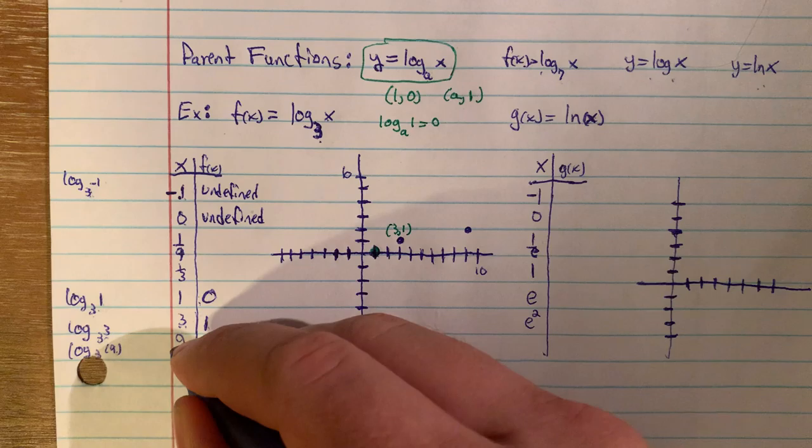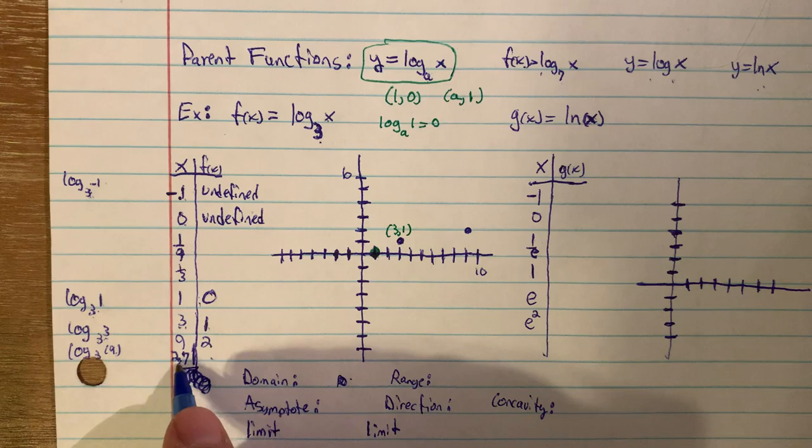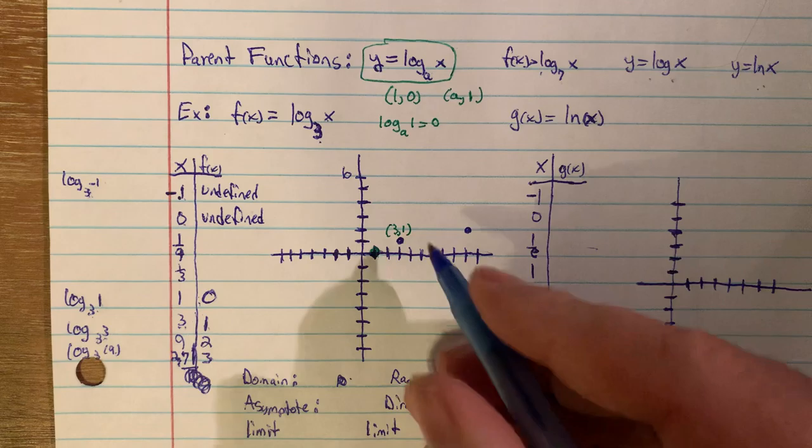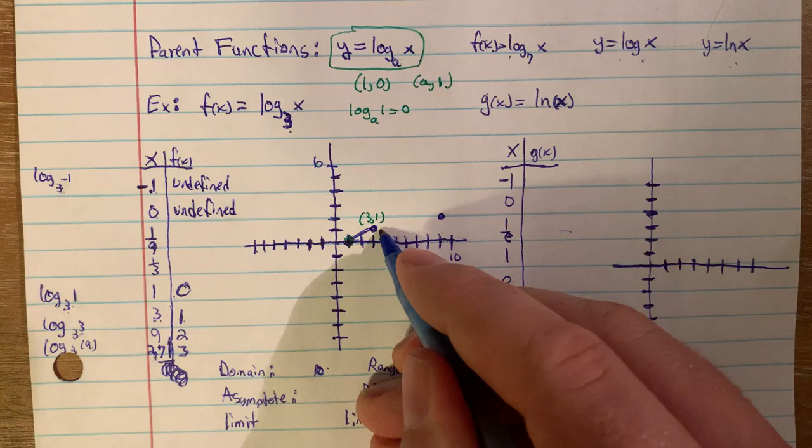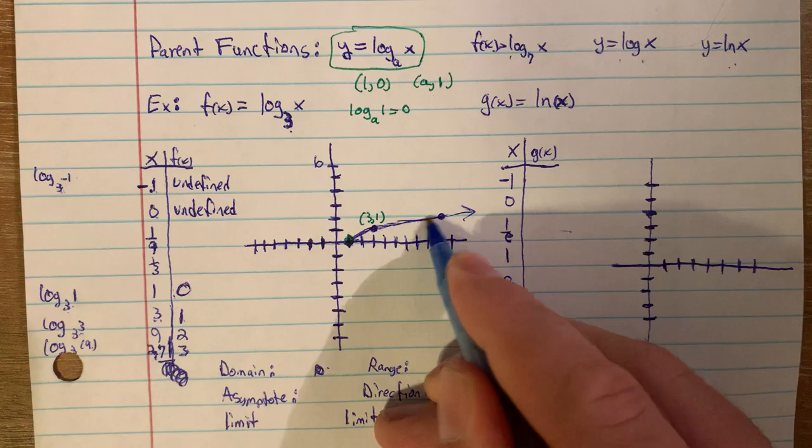What about x = 9? Log base 3 of 9 — 3 to what power gets you 9? That's 3 squared, so y equals 2. We go all the way to x = 9 before we reach y = 2. The next easy x value is 27: log base 3 of 27 gives y = 3, which would be way off the graph.